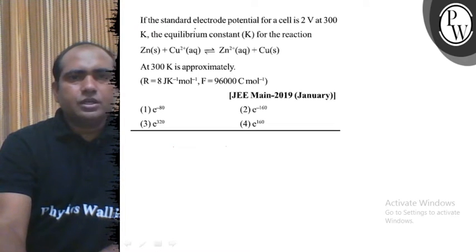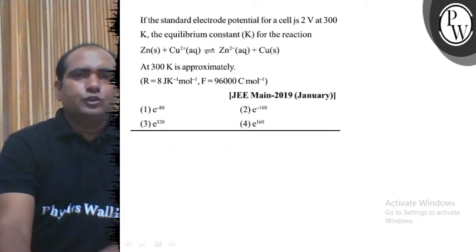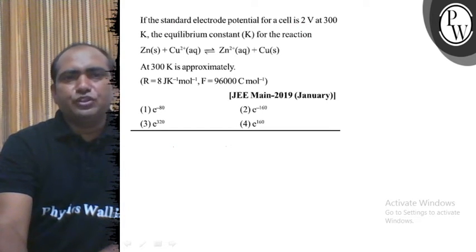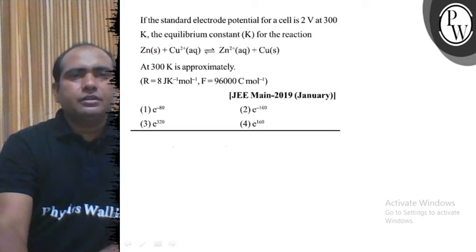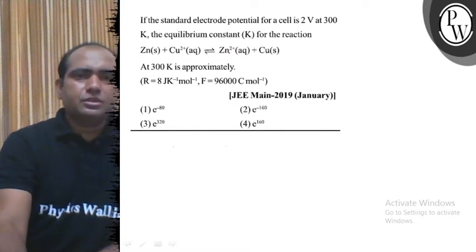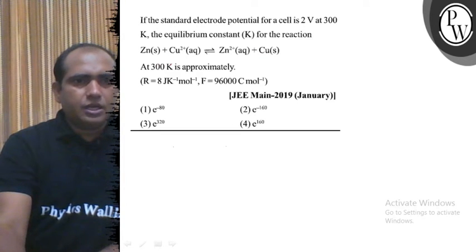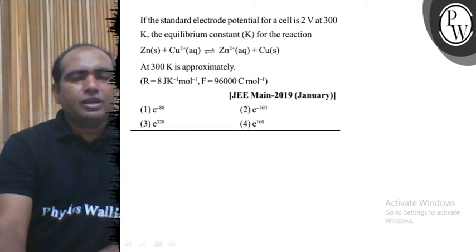Hello dear student, your question: If the standard electrode potential for a cell is 2 volts at 300 Kelvin, the equilibrium constant K for the reaction Zn(s) + Cu²⁺(aq) ⇌ Zn²⁺(aq) + Cu(s) at 300 Kelvin is approximately... R = 8 joule per Kelvin per mole and Faraday constant = 96000 coulomb per mole.